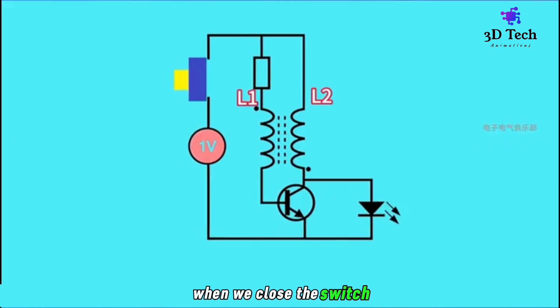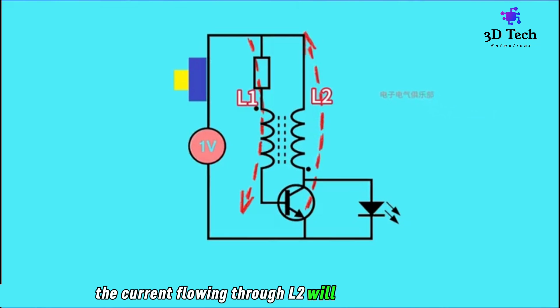When we close the switch, current flows. Since the current cannot suddenly change, it increases slowly. When the transistor turns on, the current flowing through L2 gradually increases.